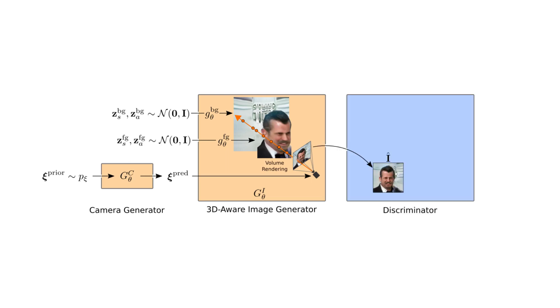This rendering we then provide as input to the discriminator. To train the discriminator, we further sample real images from the data distribution. Finally, the discriminator predicts whether the samples are real or not, and our whole system is trained only using the GAN objective.